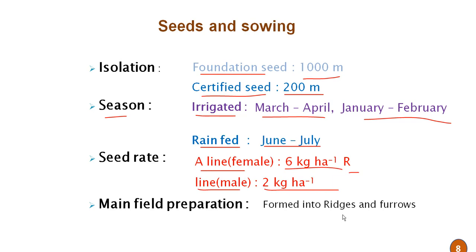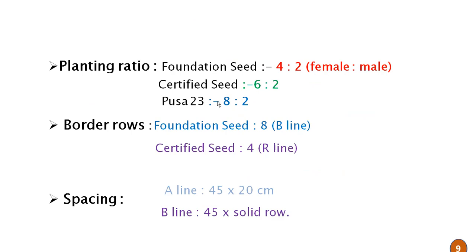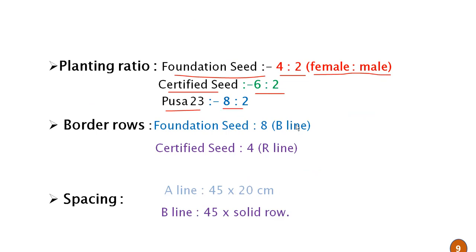Main field preparation: ridges and furrows are formed. Planting ratio: in case of foundation seed, the planting ratio is 4 rows (female) to 2 rows (male); in certified seed it is 6 rows to 2 rows. In the case of Pusa 23, the particular variety ratio is 8 rows to 2 rows, meaning 8 rows of female and 2 rows of male.